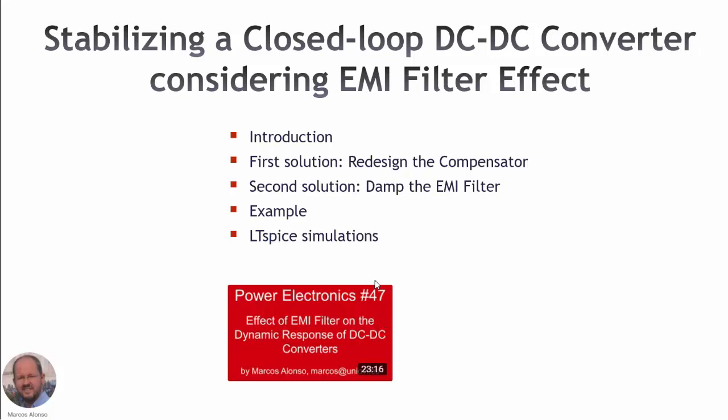Today we are going to see first an introduction, and then we will present two solutions to make the operation of the DC-DC converter in closed loop stable including the EMI filter effect. The first solution is to redesign the compensator, and the second is to damp the EMI filter. We will study everything using an example buck converter and present several LTSpice simulations to verify the analysis.